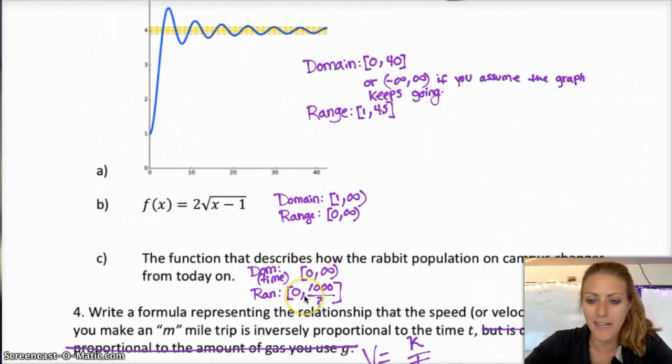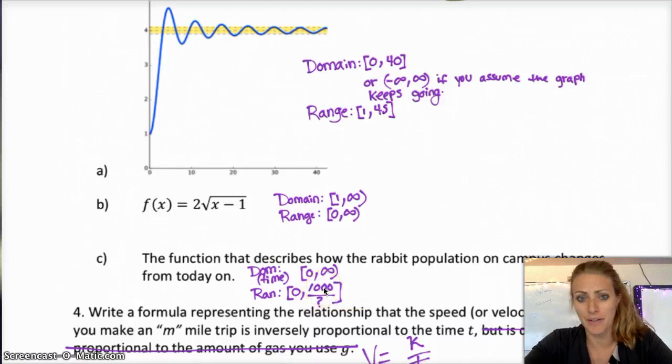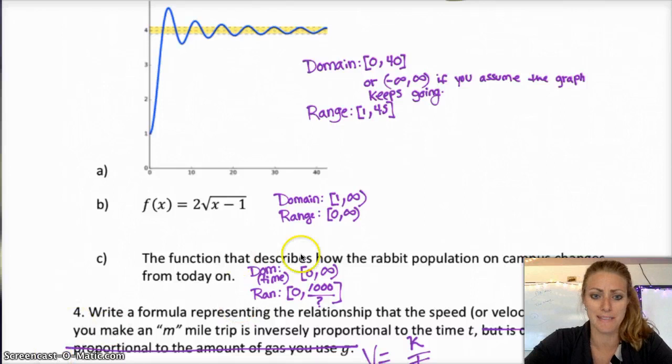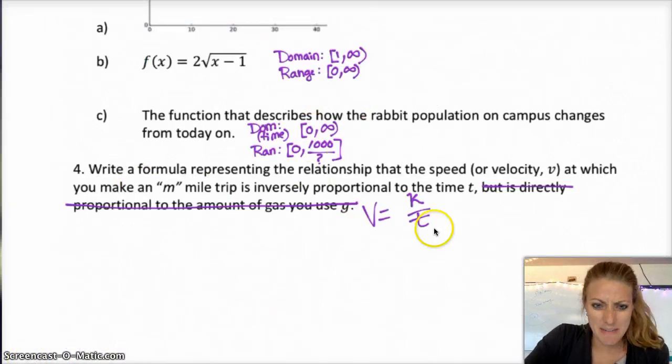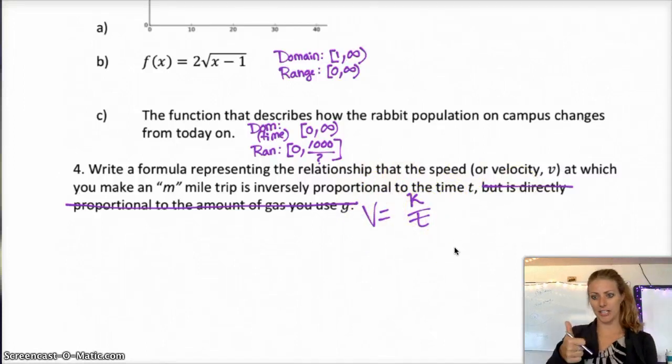And then for the rabbit one, you want to think about time is going to go from today on, so 0 to infinity. The range is the number of rabbits, so that might have a limiting point. We might be only able to fit 1,000 rabbits on campus or something like that, so that's kind of questionable. And last, to make it simpler, just do the velocity and time.